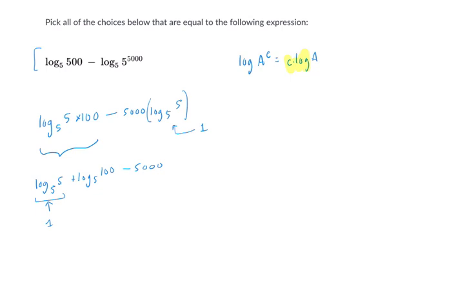So now we have this. We have something interesting. We have 1 plus the log base 5 of 100. And minus 5,000. Okay, we're getting somewhere here. And we can then rearrange that as the log base 5 of 100. And then minus 5,000 plus 1 is minus 4,999.